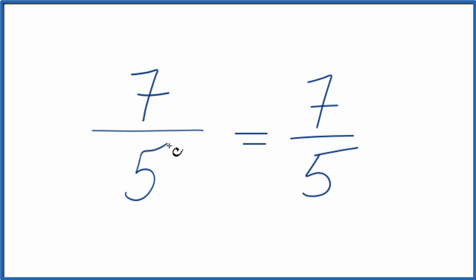It is an improper fraction in that 7, the numerator, is larger than 5, the denominator. So we could write it as a mixed fraction. Let's try that.